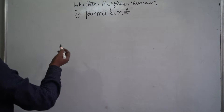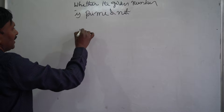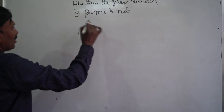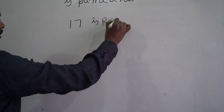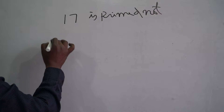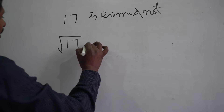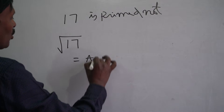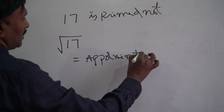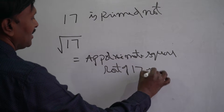Let me check first whether the given number is prime or not. How to check it? Example: 17. See how to check whether the given number, 17, is prime or not. First, what we do is find the square root of 17. This is equal to approximately 5 — the approximate square root of 17 is 5.